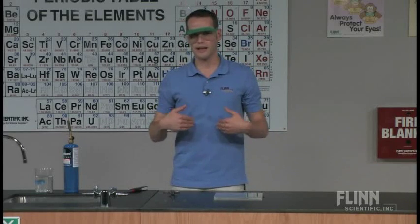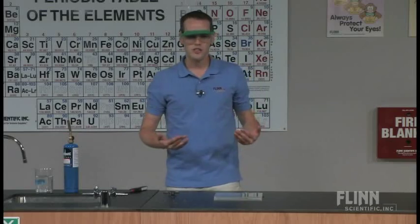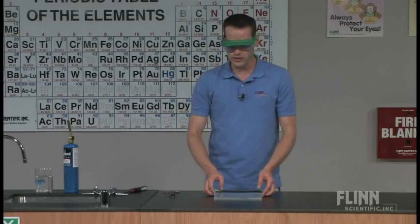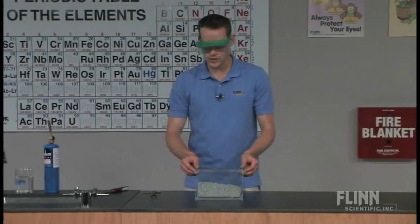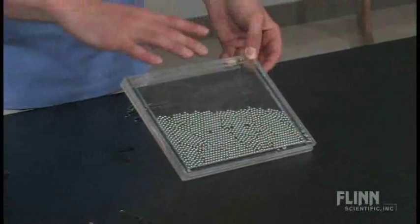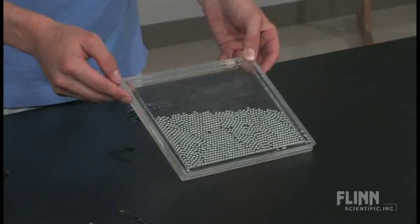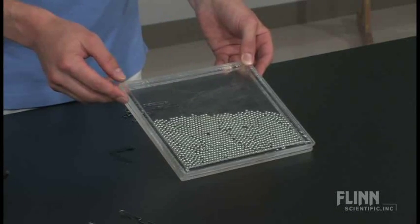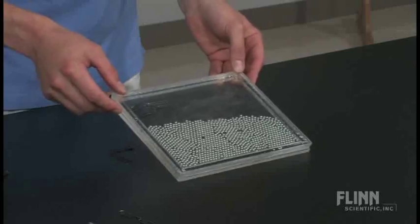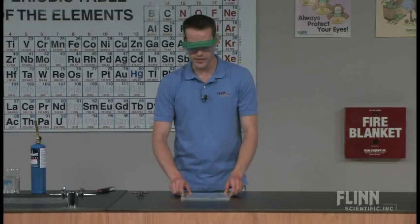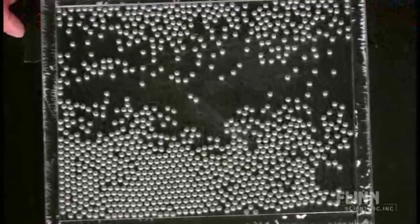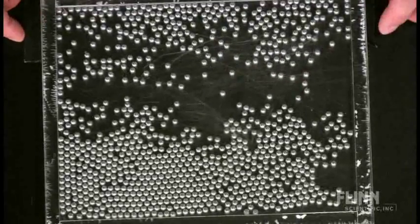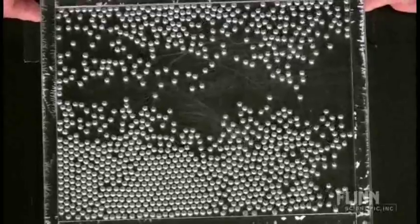Now, this is hard for my students to visualize if I'm just talking about it. So a really handy tool that you can build to use in your classroom is just this. This is just two sheets of plexiglass with a little plexiglass border around it, held together with a glue that will hold plexiglass. And it's just filled with some BBs, regular shot that you can buy in a store.